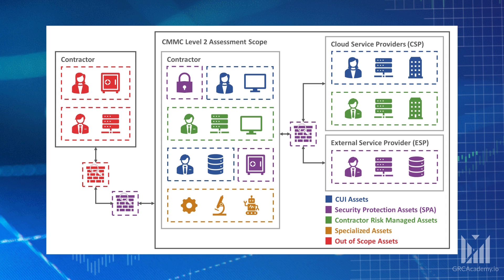The green-colored items are contractor risk-managed assets, or CRMAs. CRMAs are in scope but are only required to be documented. They should be sufficiently documented showing that there are policies, procedures, or technical measures in place to prevent CUI from reaching these assets. If the assessor believes those measures are insufficient, the assessor might assess them just to be double sure.